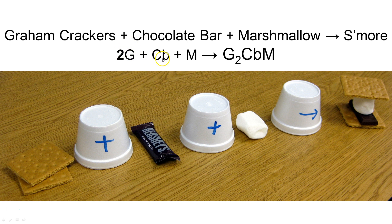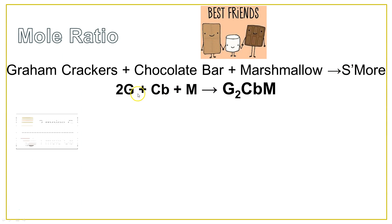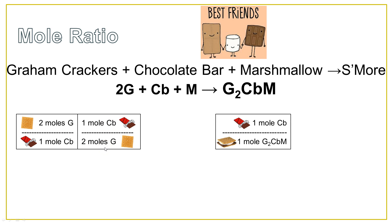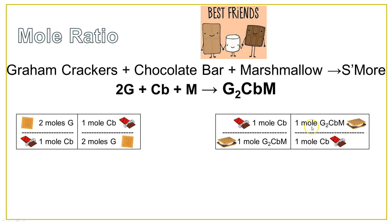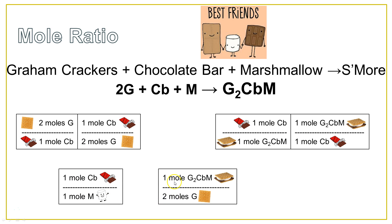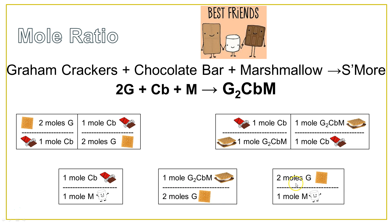I can get a ratio from this: two graham crackers for every one chocolate bar, two graham crackers per one marshmallow, one chocolate bar for one s'more. I can get all these different mole ratios from that. Two moles of graham crackers are going to react with one mole of chocolate bar, or I could flip this around — one mole of chocolate bars reacts with two moles of graham crackers. One mole of chocolate bar reacts with one mole of s'mores, and one mole of s'mores reacts with one mole of chocolate bar — these are just inverses of each other. One chocolate bar reacts with one mole of marshmallows. One mole of s'mores reacts with two moles of graham crackers. All of these are just different relationships formed by looking at the coefficients in my balanced chemical equation.